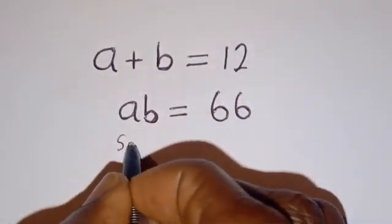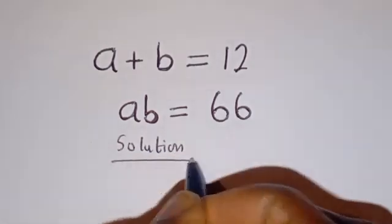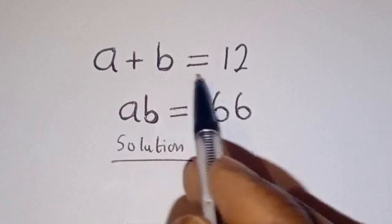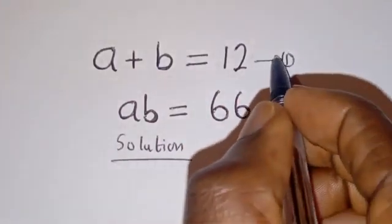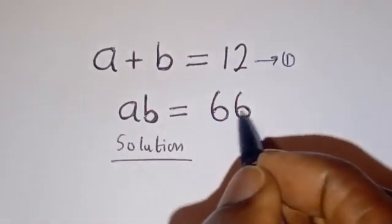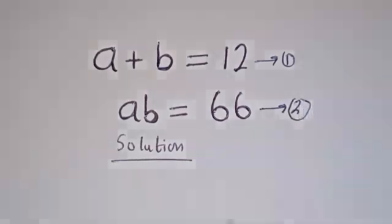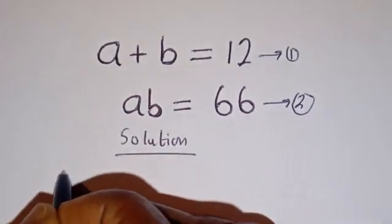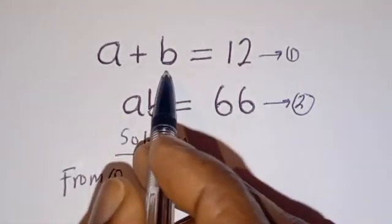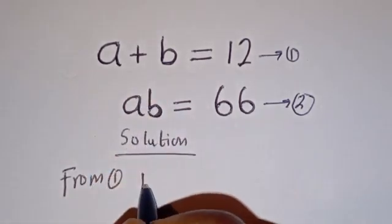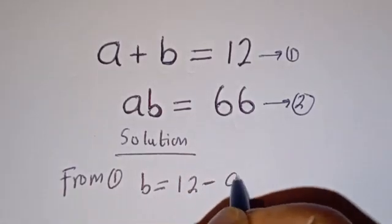Solution. A plus B is equal to 12 — let's call this equation 1. A B is equal to 66 — let's call this equation 2. Now from equation 1, let's make B the subject of the formula. B is equal to 12 minus A.